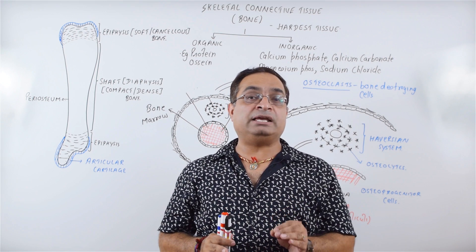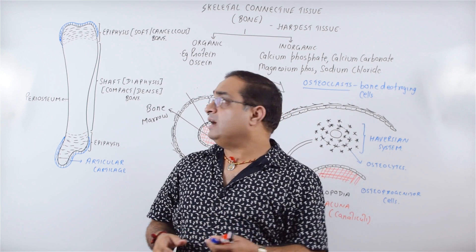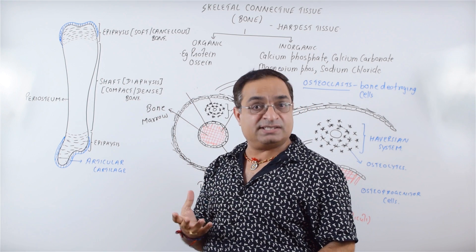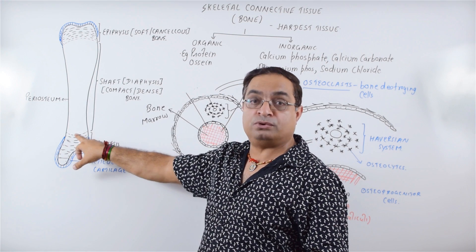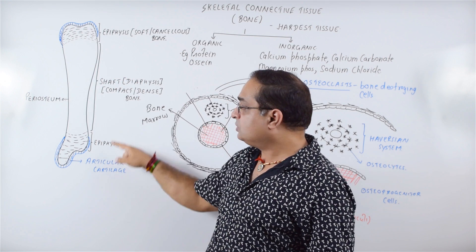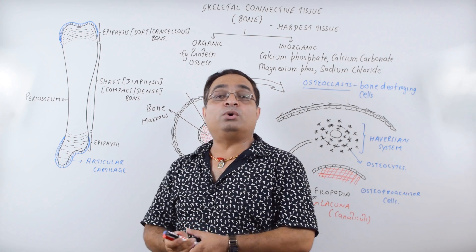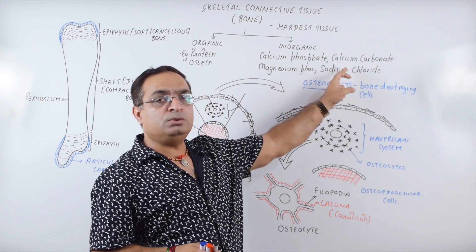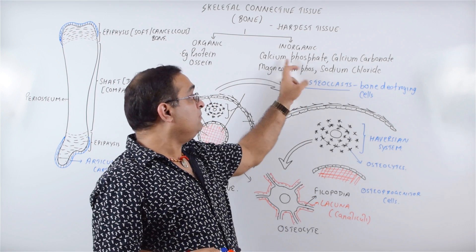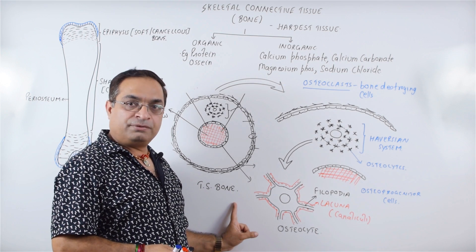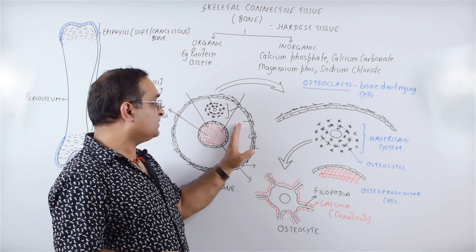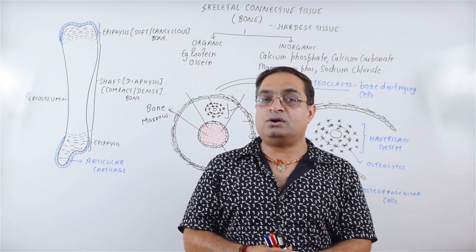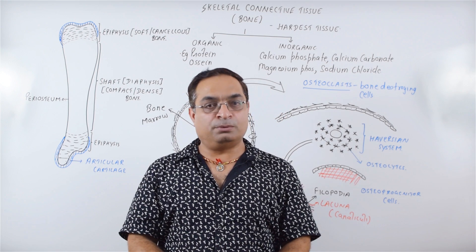So a bone has osteoprogenitor cells, osteoblasts, osteocytes, and osteoclasts. Let's have a quick recap: we have seen the generalized structure of a long bone — the shaft or diaphysis is the compact/dense bone region where the Haversian system is present. The terminal ends are epiphysis, the soft or cancellous bone covered by articular cartilage, a type of hyaline cartilage. Bone has organic components (most important protein: ossein) and inorganic components (most abundant: calcium phosphate). The transverse section shows periosteum, endosteum, matrix, and Haversian lamellae.